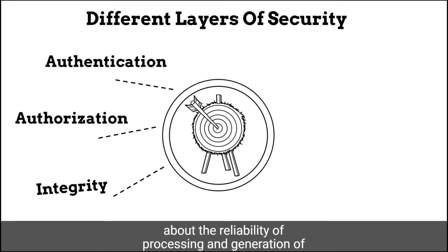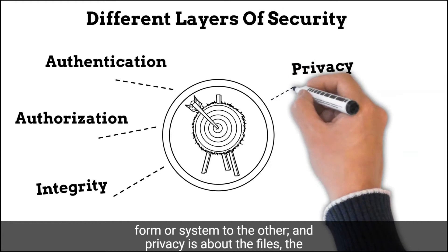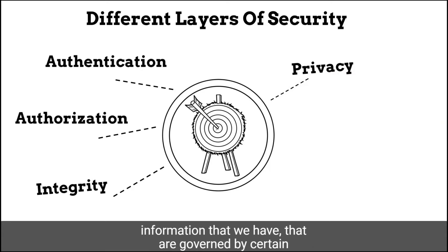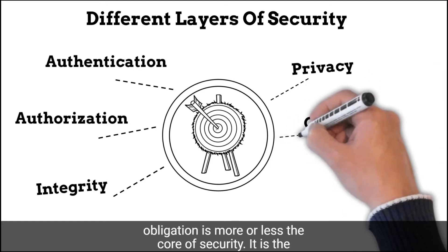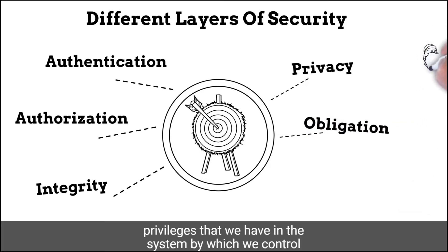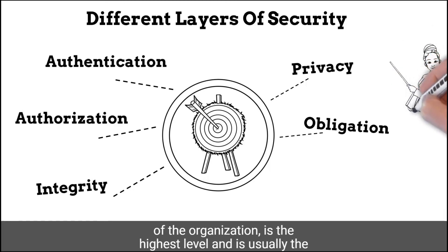Integrity is about the reliability of processing and generation of files and how the files are kept during transition from one form or system to another. Privacy is about information governed by certain regulatory requirements that must be maintained. Obligation is more or less the core of security — it is the privileges we have in the system by which we control certain areas of the processes, functions, data, and files of the organization.